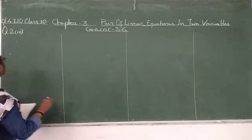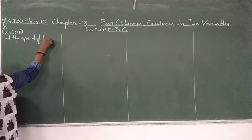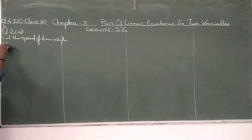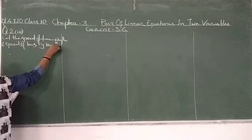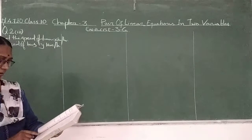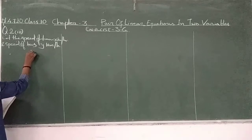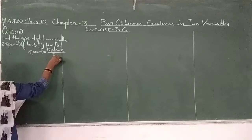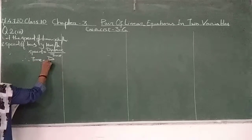Let's start. Let the speed of train be x km per hour and speed of bus be y km per hour. She travels 300 km. We are applying the formula: speed equals distance divided by time, and therefore time equals distance divided by speed.